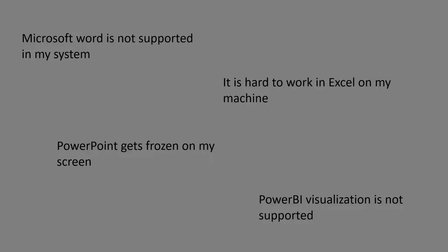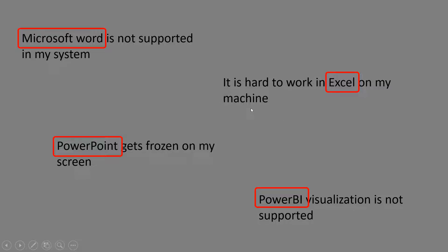Using the NER system, if you have all these complaints received either by chat or email, the model will automatically recognize the entities — for example, the product. In the first chat, the complaint is related to Microsoft Word; another is Power BI; another is Excel. Once it recognizes these, it can forward or assign the complaint to the team dedicated to that product. All these things can be done automatically.